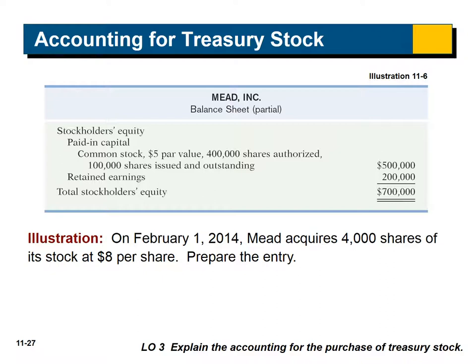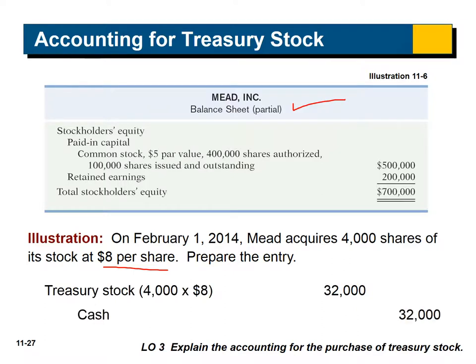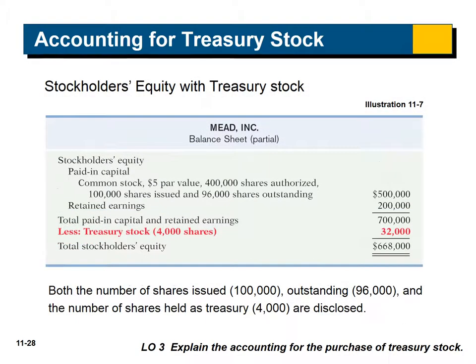Here's an example. On February 1, 2014, Mead acquires 4,000 shares of its own stock at $8 per share. The journal entry is to debit treasury stock and credit cash for the cost — 4,000 shares times $8 equals $32,000. That treasury stock is a contra equity, so on the balance sheet we show 'less treasury stock,' subtracting it to get total stockholders' equity.